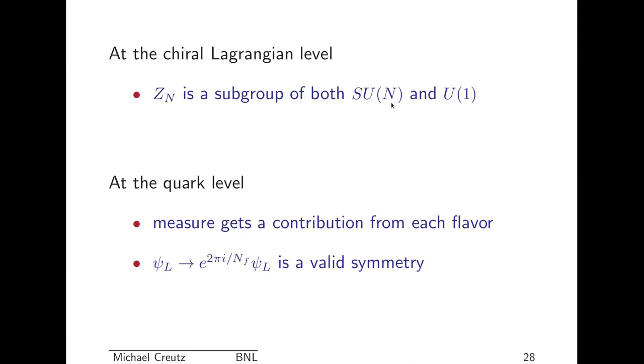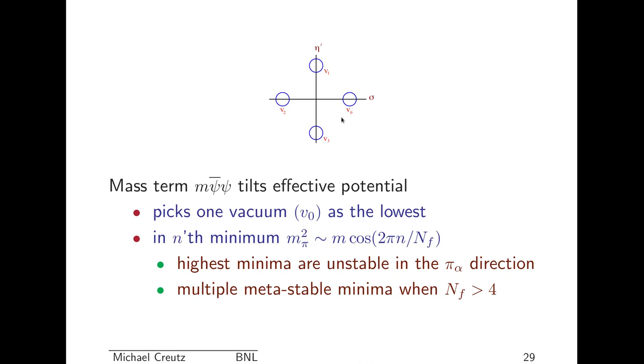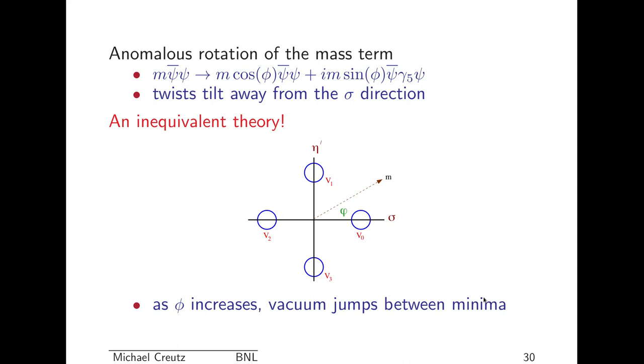So this potential actually has a Z_N symmetry with N flavors. There are N_f equivalent minima in the sigma eta prime plane. So for example, with four flavors, I could have the four minima. So at the chiral Lagrangian level, Z_N is a subgroup of both SU(N_f), and so therefore it's a valid symmetry. At the quark level, the measure gets a contribution from each flavor. And so if I give each flavor a factor of e to the 2pi over N_f, then I put them all together, I get e to the 2pi, which is a valid symmetry. Now, we talked at the beginning about the mass tilting the effective potential. And as it tilts, it depicts one minimum as the best, the lowest. The other minima become either metastable or unstable, depending on how far up they are in this circle of minima. And there are multiple metastable minima whenever N_f is greater than four.